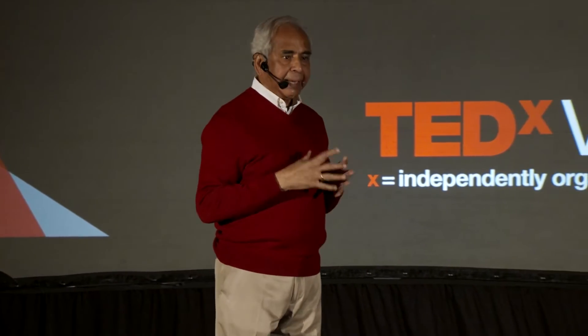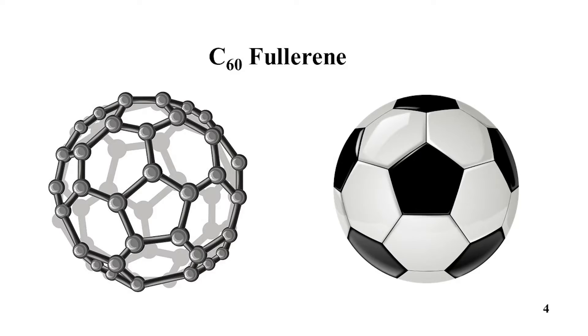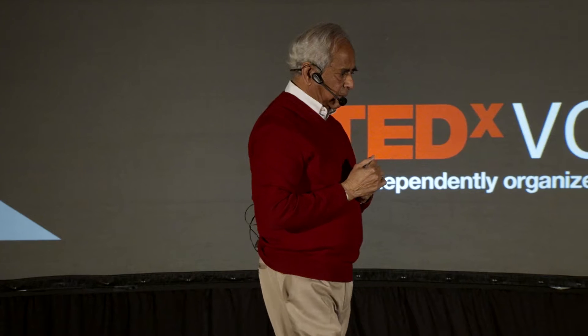In 1985, at Rice University, they discovered that if you take 60 atoms of carbon, they arrange themselves exactly like a soccer ball. And this soccer ball they call fullerene, or buckyballs. It is composed of hexagons and pentagons, and the carbon atoms are arranged on the surface of this hollow cage. They got the Nobel Prize for this discovery.